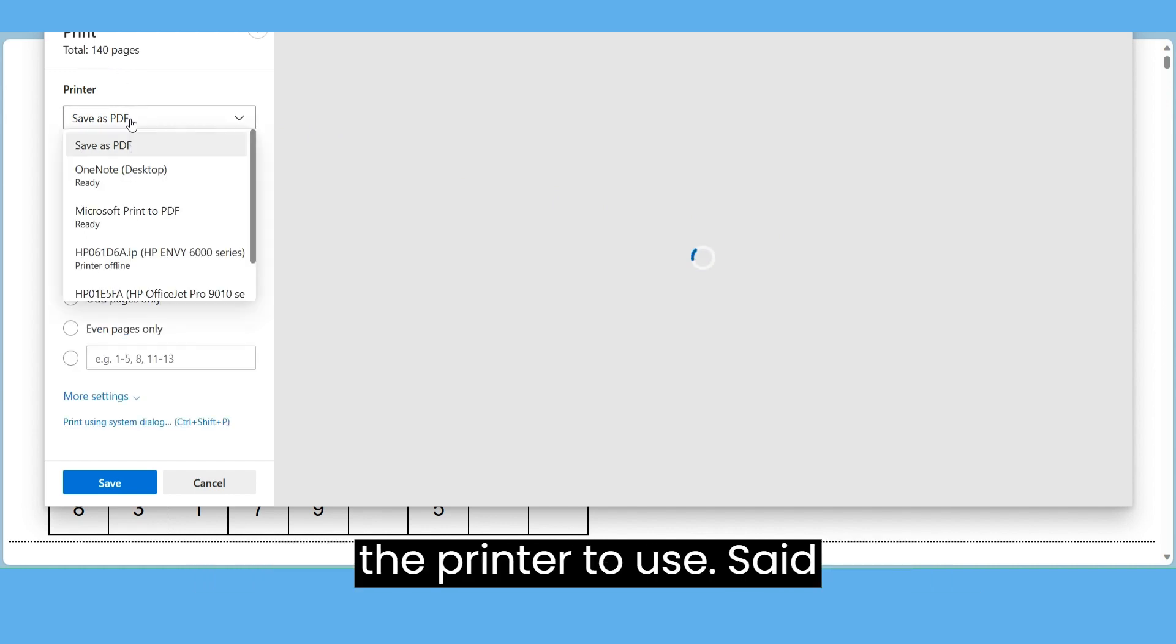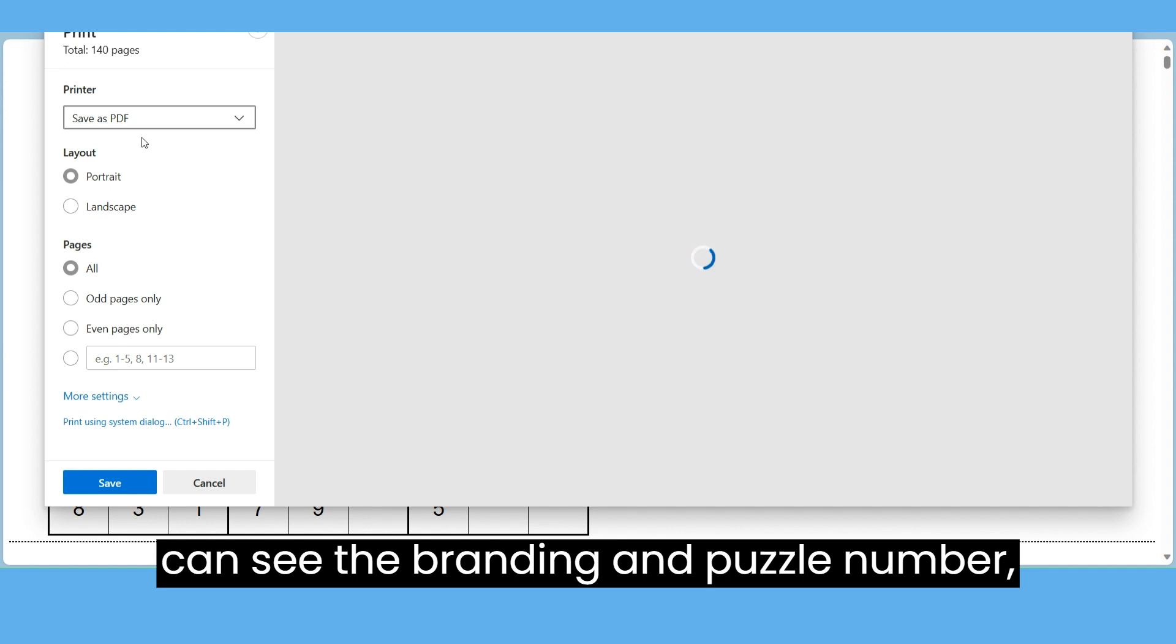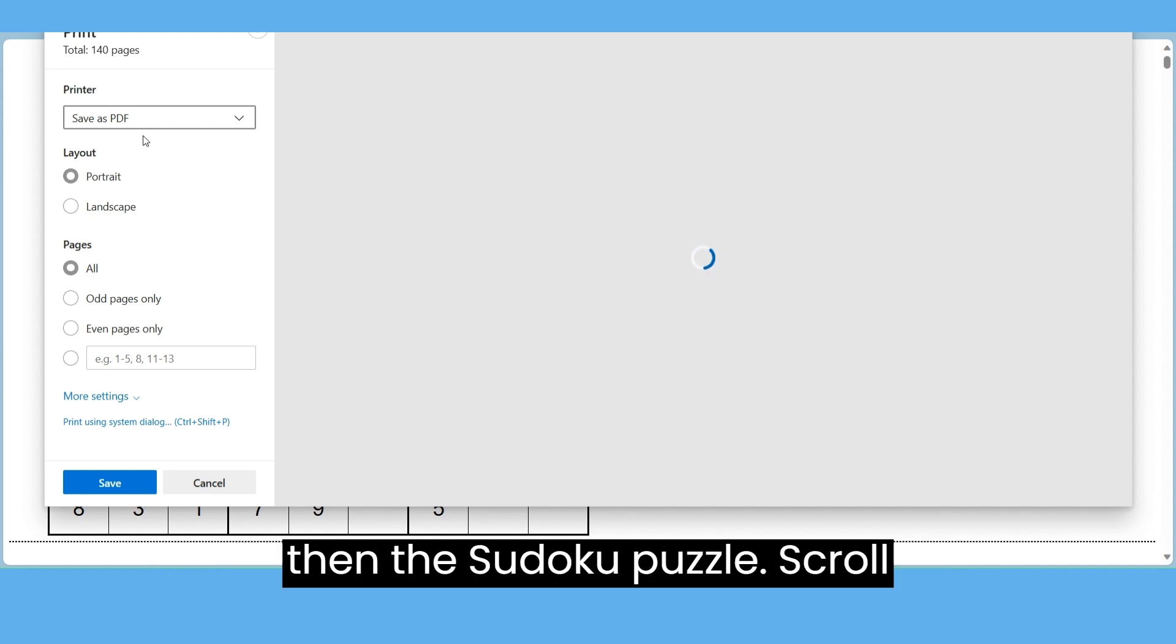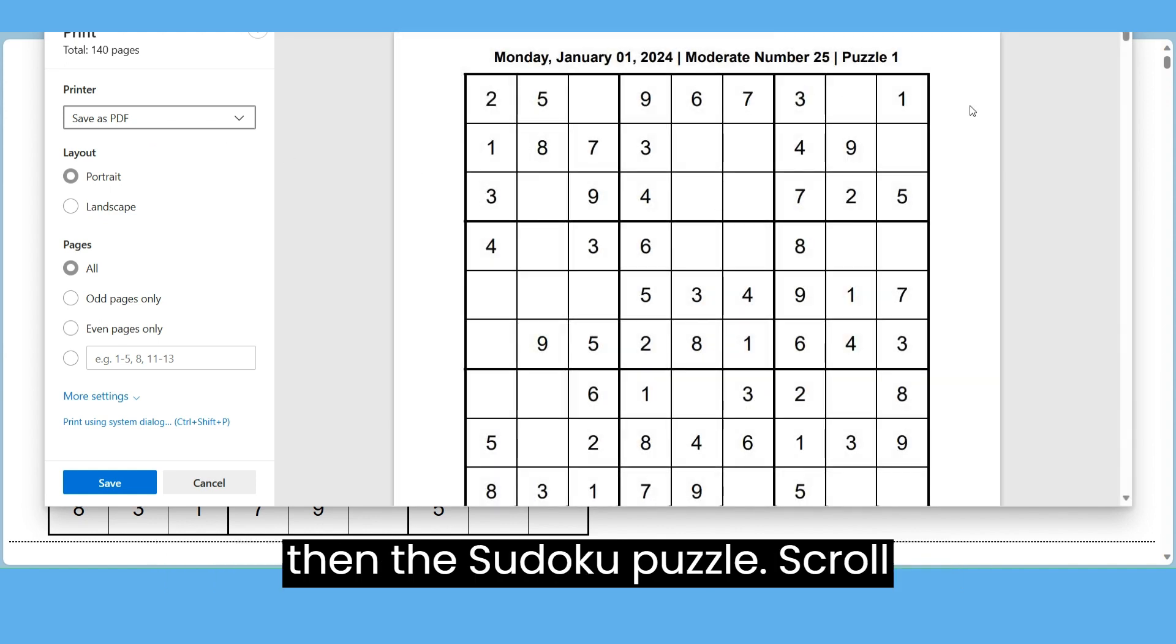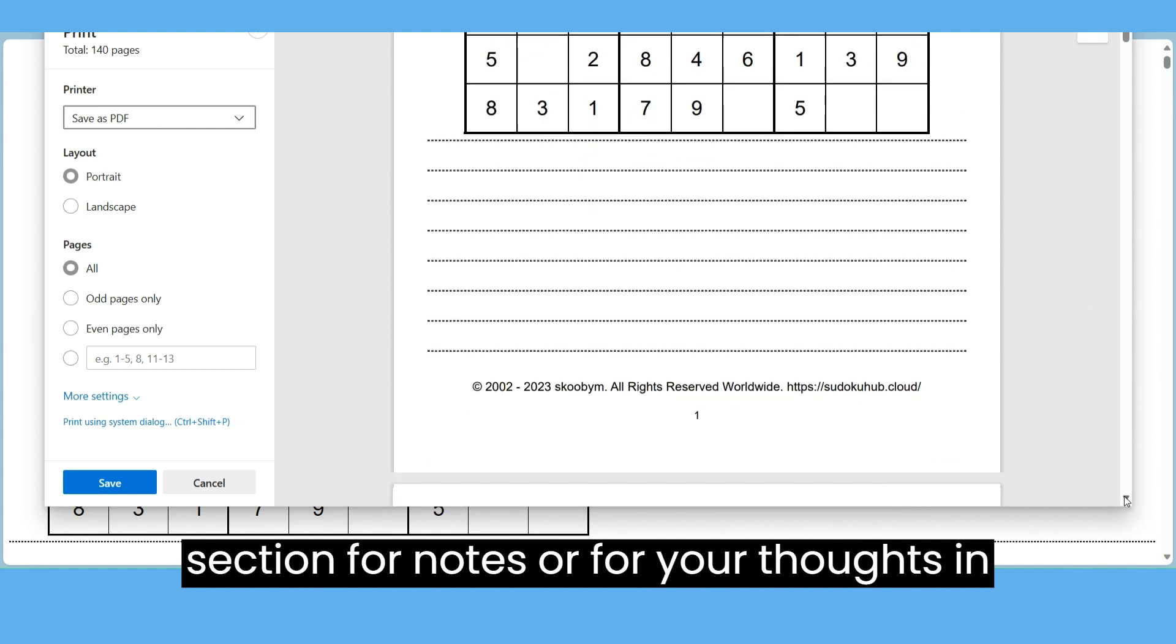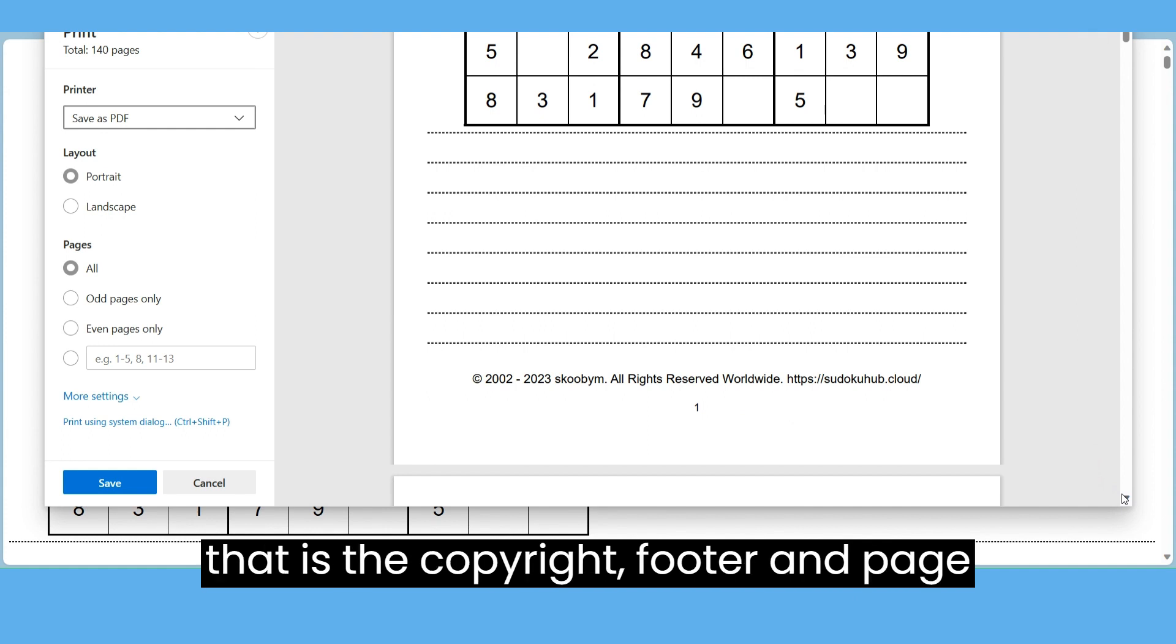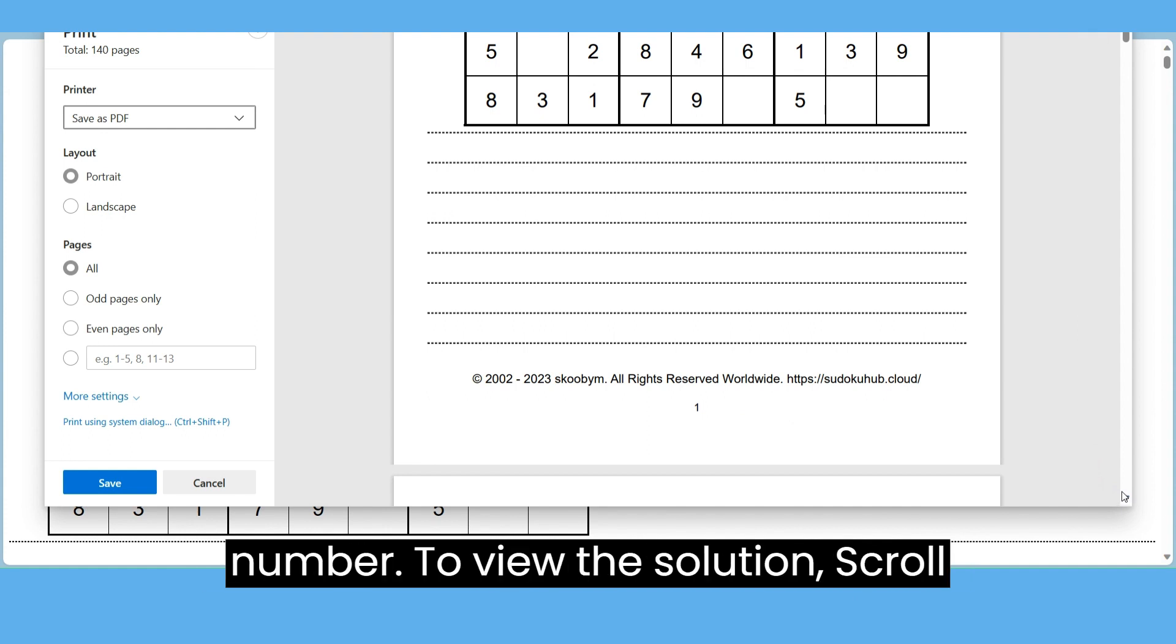In the main window you can see the branding and puzzle number, then the Sudoku puzzle. Scroll down under the puzzle and you'll see a section for notes or for your thoughts in solving the puzzle. Directly under that is the copyright footer and page number. To view the solution, scroll down until the solution section appears.